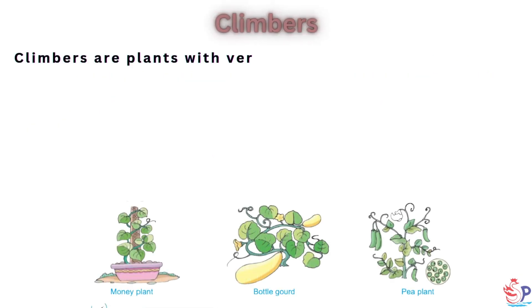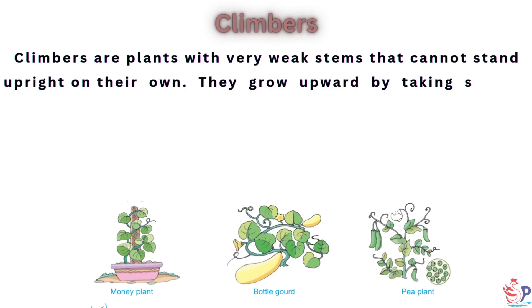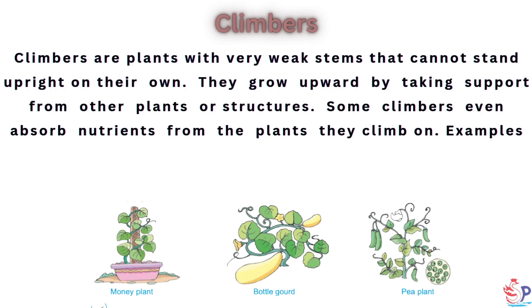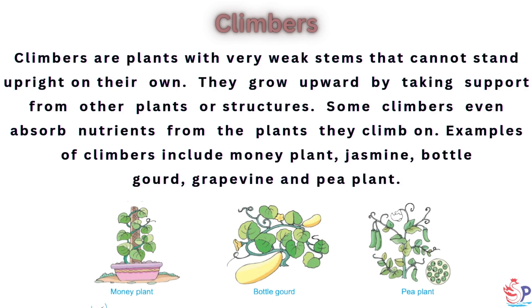Climbers are plants with very weak stems that cannot stand upright on their own. They grow upward by taking support from other plants or structures. Some climbers even absorb nutrients from the plants they climb on. Examples of climbers include money plant, jasmine, bottle gourd, grapevine and pea plant.